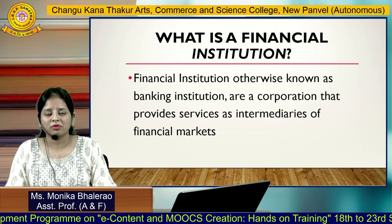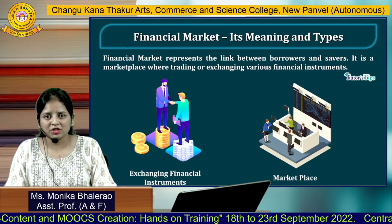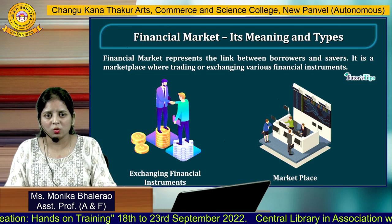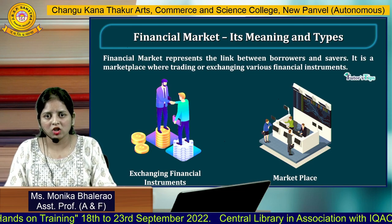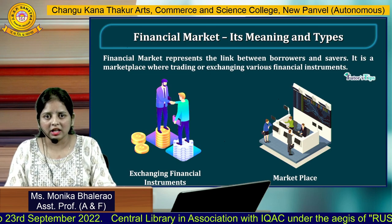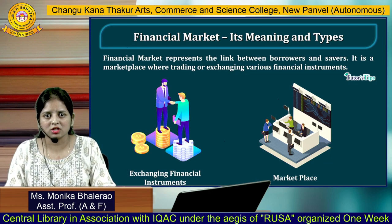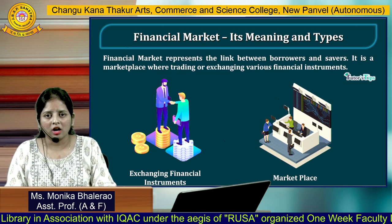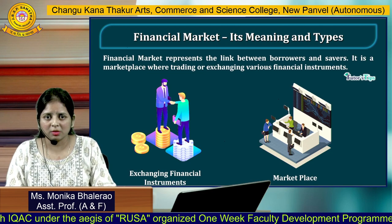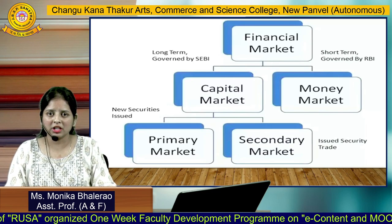The next component is financial markets. Financial markets are where the link between borrowers and savers is created. Here you can sell or buy all goods and services — in financial terms, that means shares, securities, bonds, and debentures. You can buy or sell all these securities in the financial markets. Basically, the financial market is divided into two parts: capital market and money market.